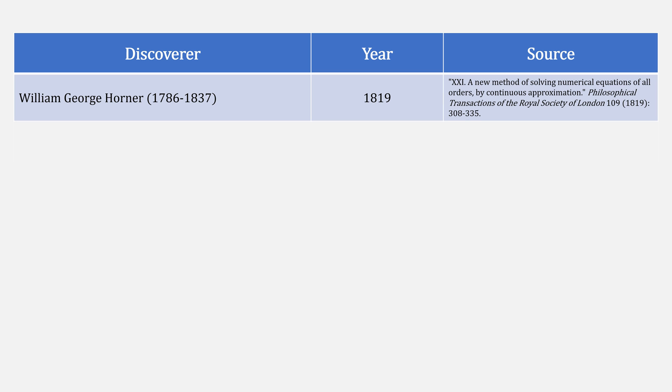Horner's method is credited to William George Horner, who published A New Method of Solving Numerical Equations of All Orders by Continuous Approximations in 1819, although the method had previously been found by Paolo Ruffini in 1804.